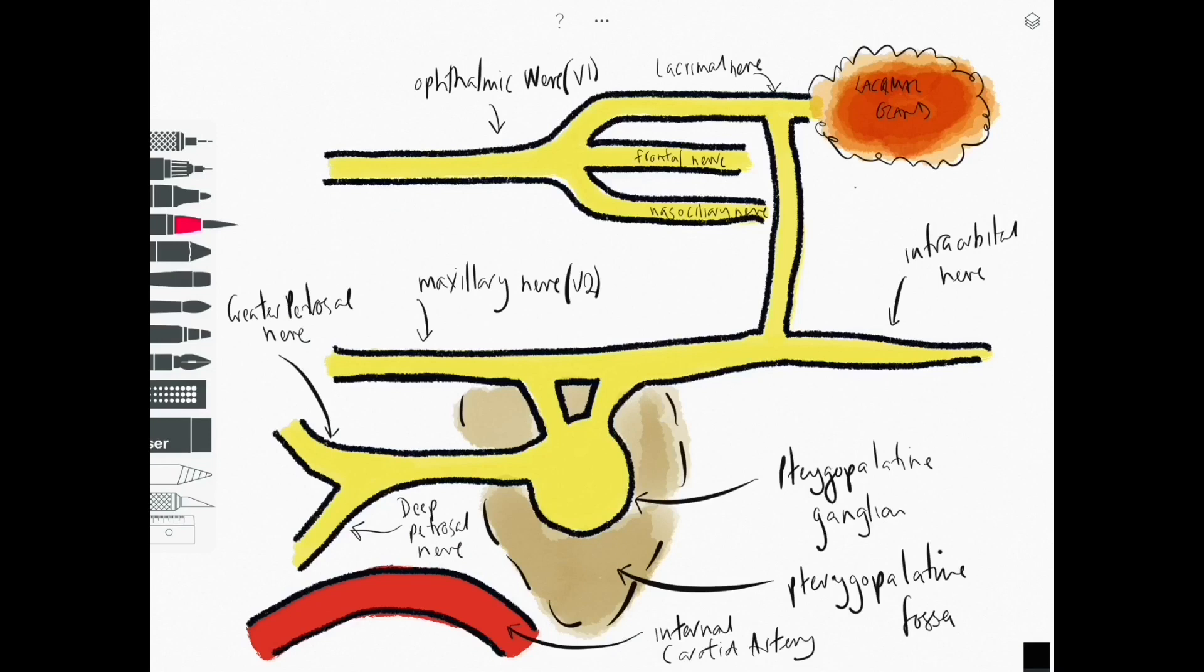So the greater petrosal nerve is for the parasympathetic nerve supply and the deep petrosal nerve is the route in for the sympathetic nerve supply and they travel together through a nerve which is called the nerve of the pterygoid canal.